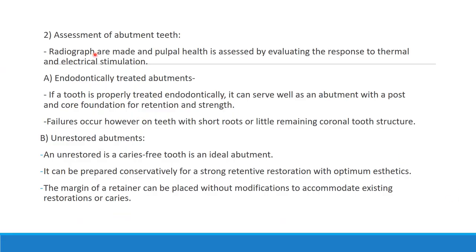Assessment of the abutment teeth: you can use radiographs and pulp testing to see how healthy the tooth is. It can be endodontically treated. It can also have a post and core. Failure occurs, however, on teeth with short roots or with little remaining coronal structure — that has to be taken care of. If that is the current situation, you are supposed to build it up with a post and core. Restored abutments are highly ideal — they are caries-free and very optimal.